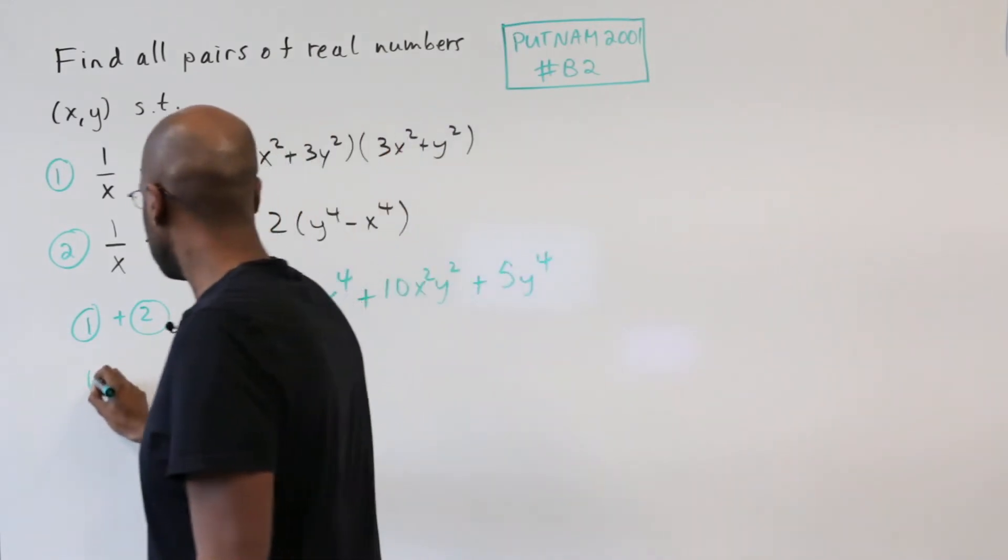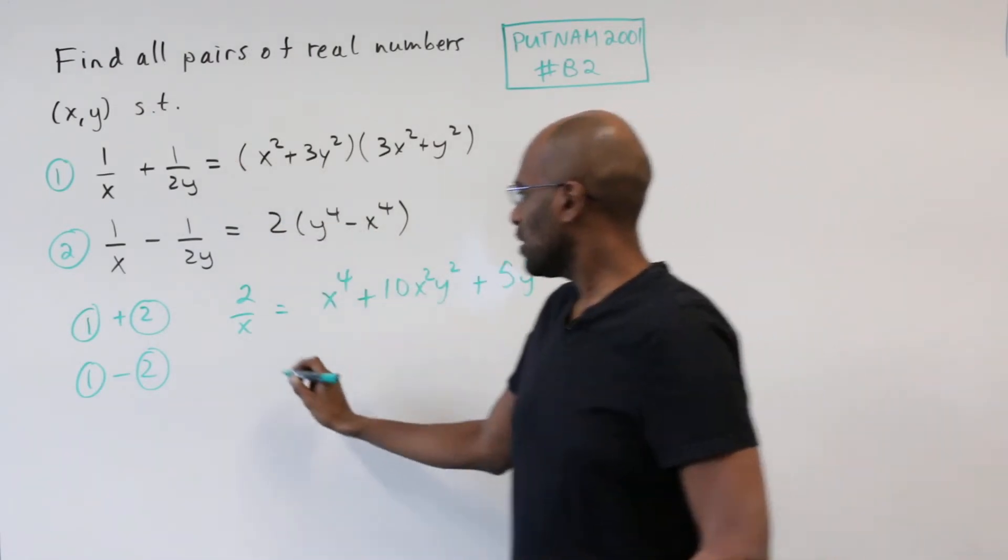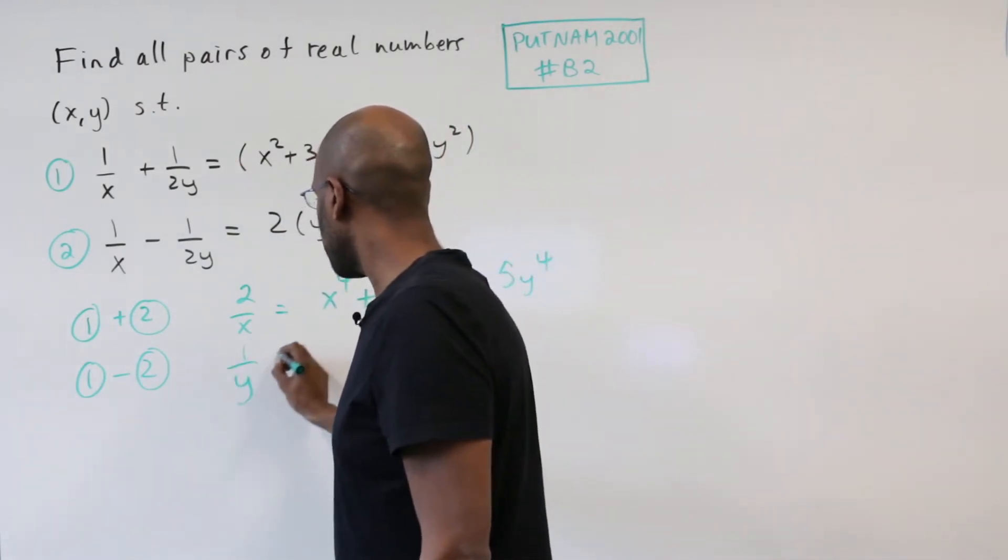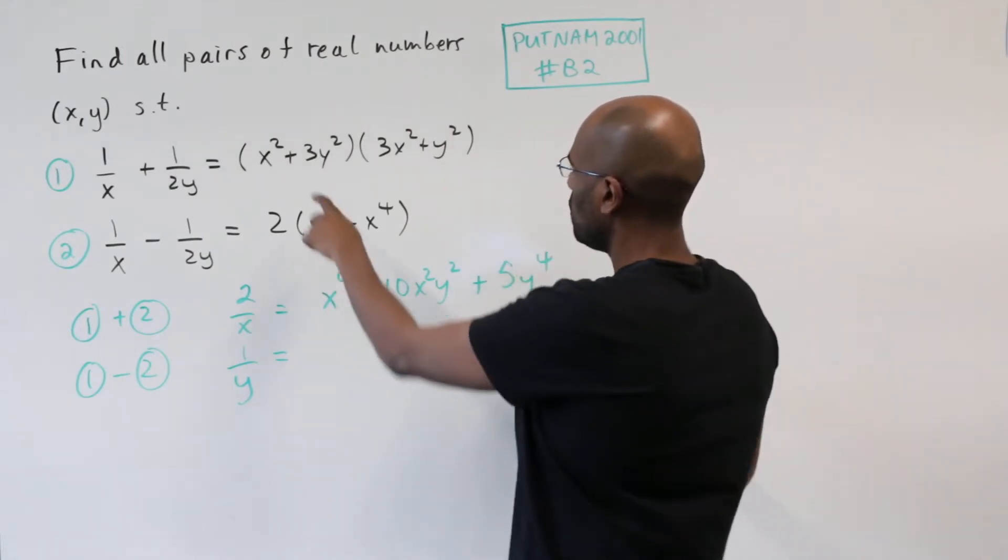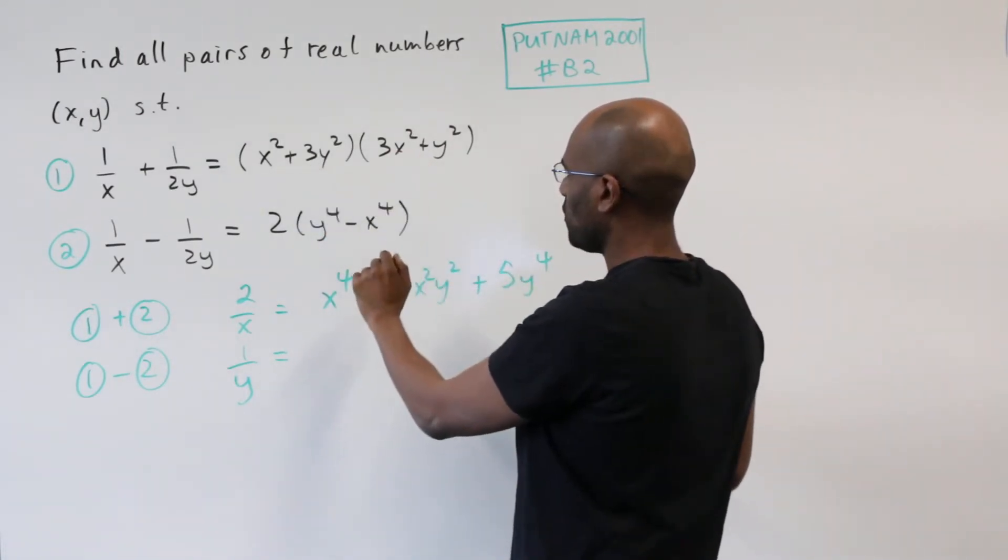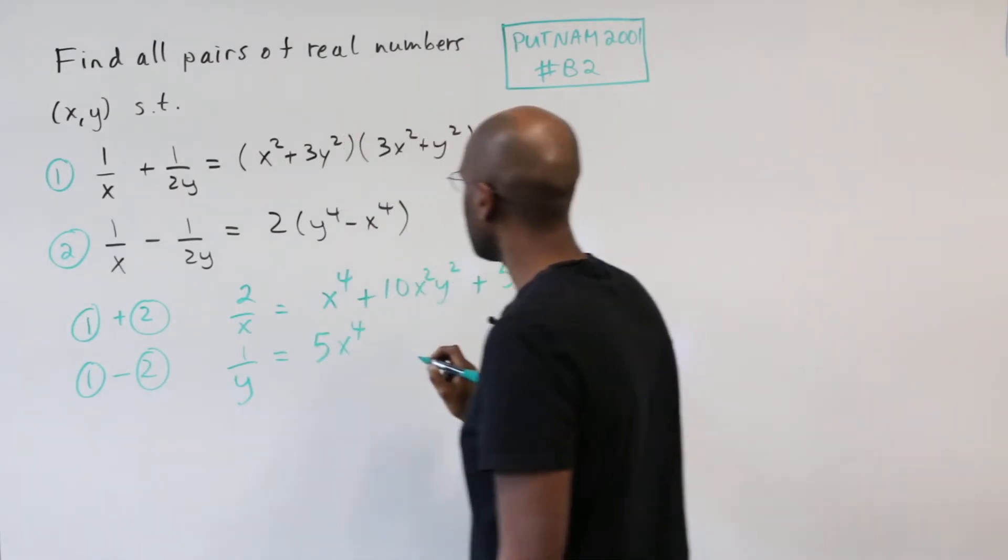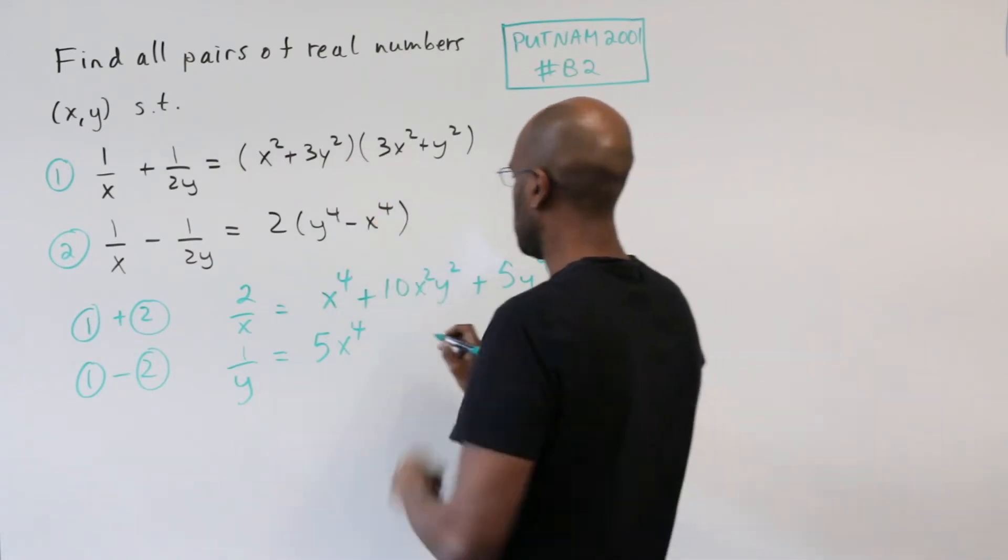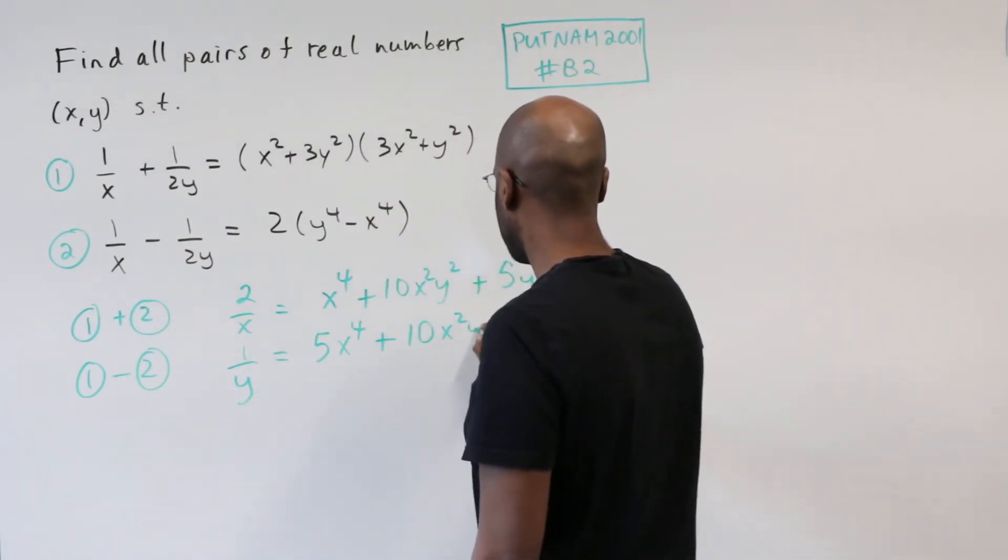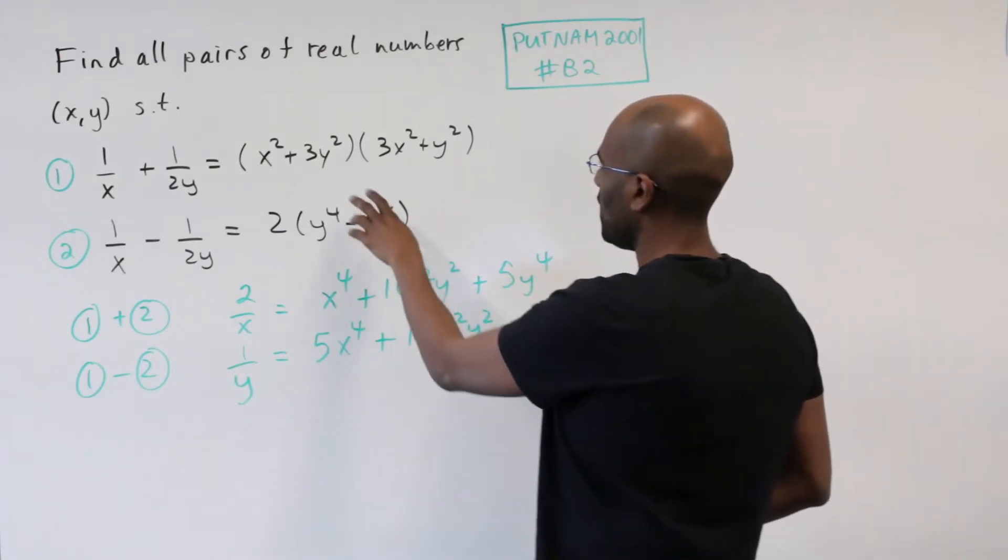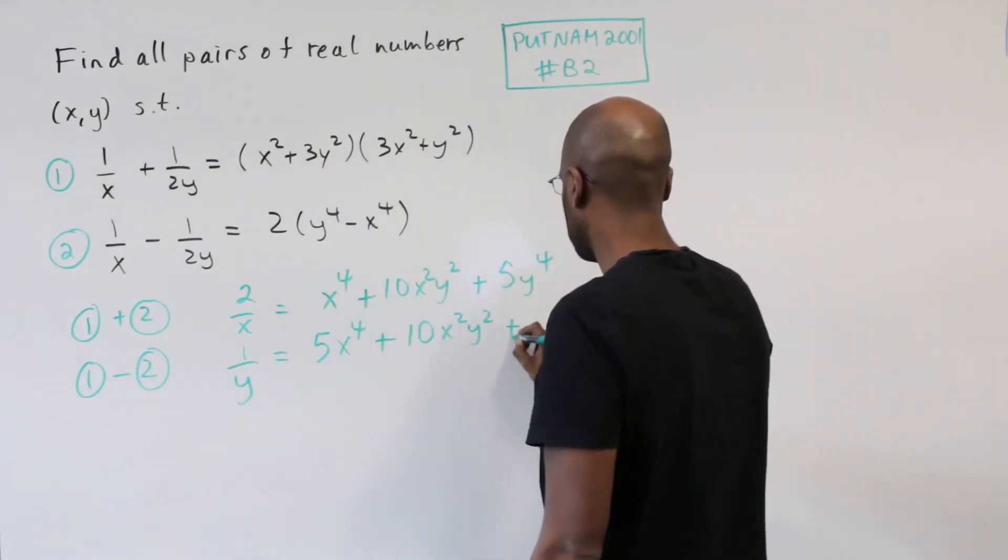Let's do a similar thing and take 1 minus 2. We'll get 2 copies of 1 over 2y which gives us 1 over y. And we'll have a similar thing subtracting. We have a 3x to the fourth. We're subtracting a negative 2x to the fourth that gives us 5x to the fourth. The cross term does not change. It's still 10x squared y squared. And then we have a 3y to the fourth minus 2y to the fourth which gives us a y to the fourth.